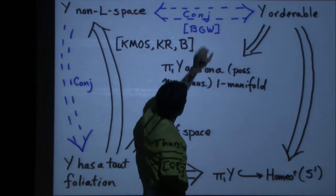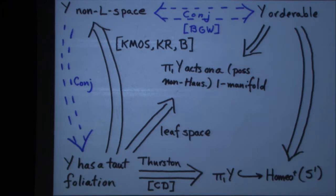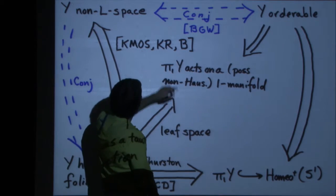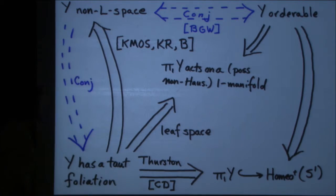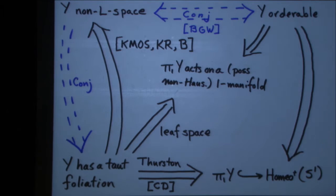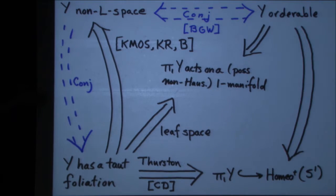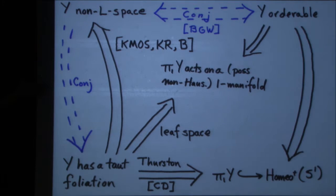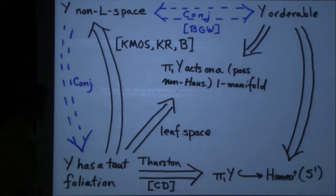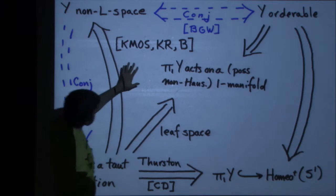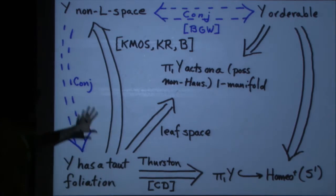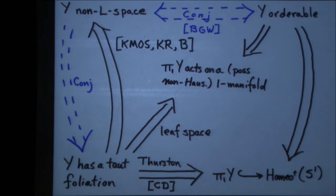That's the one arrow among those three things. It was conjectured by Boyer, Gordon, and Watson, based on some evidence, that non-L-space should be equivalent to being orderable. And then if you add the additional arrow from orderable to having a taut foliation — I'm not sure if this is attributed to anyone in the room — that's Sarah Dean Rasmussen's conjecture. So we have one arrow amongst these things, and the overall picture is that many of these other arrows would close the equivalence.